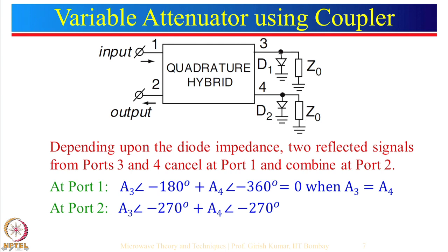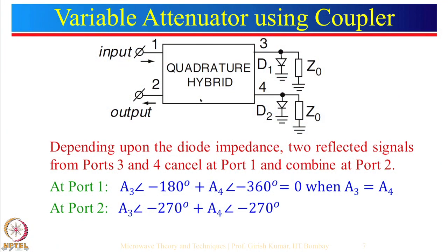A single biasing circuit can bias both diodes identically, so by changing only one biasing voltage we can change the attenuation value. The only limitation is that the bandwidth of a two-branch coupler is relatively narrow — about 10 to 20 percent. For a larger bandwidth, instead of a two-branch coupler we can use a three-branch or four-branch coupler, as discussed in previous lectures, to realize a relatively broadband variable attenuator.